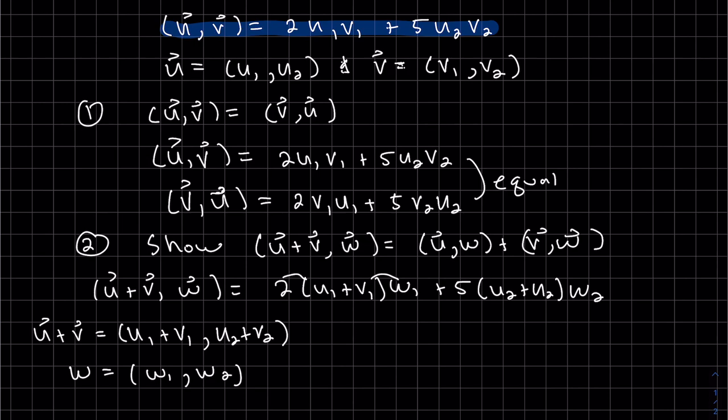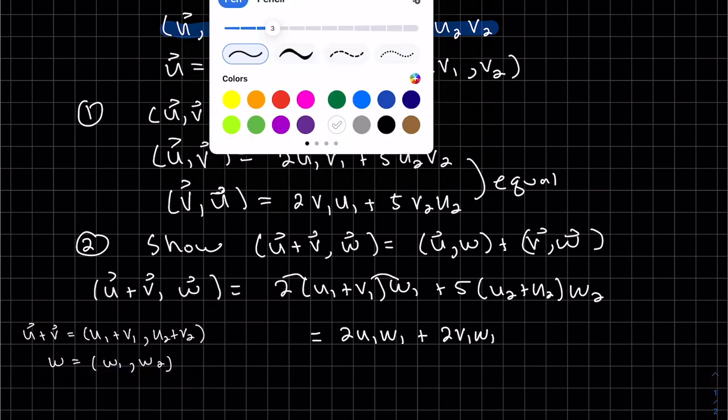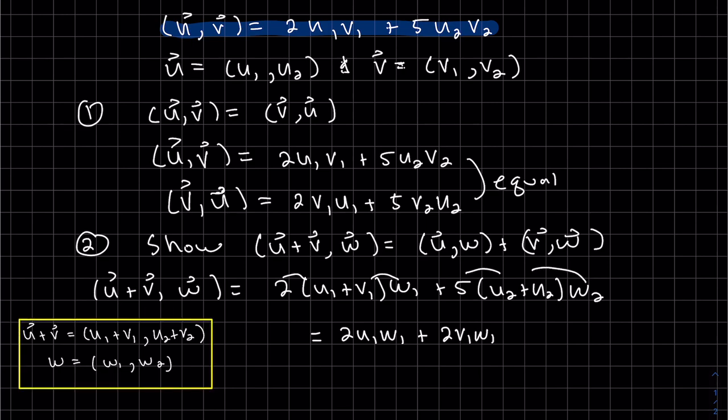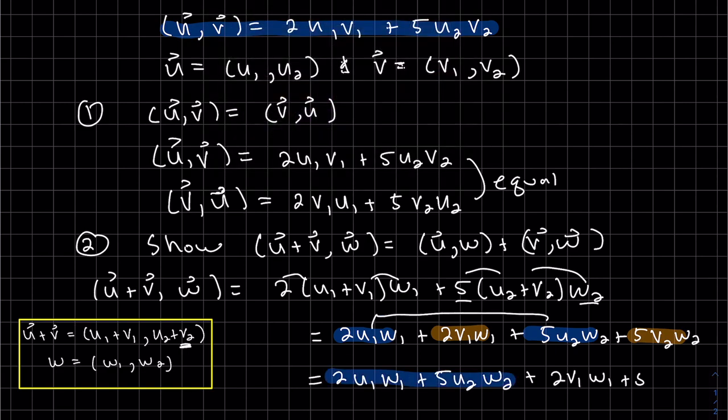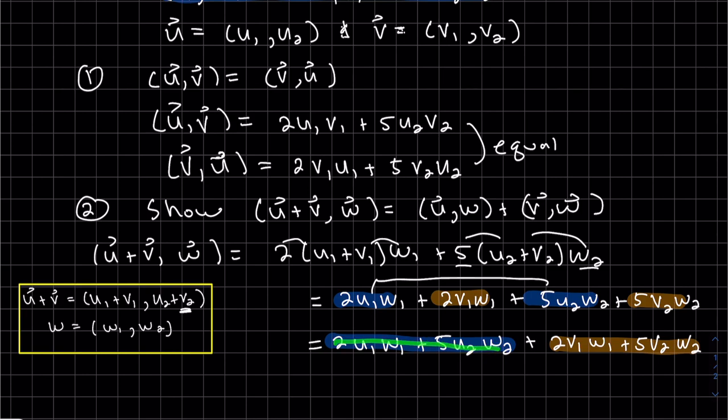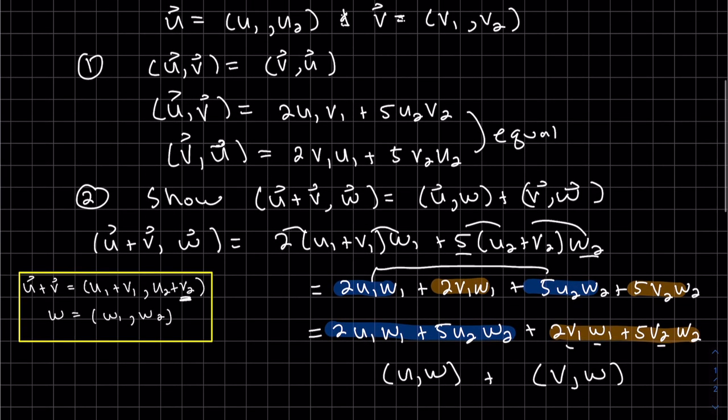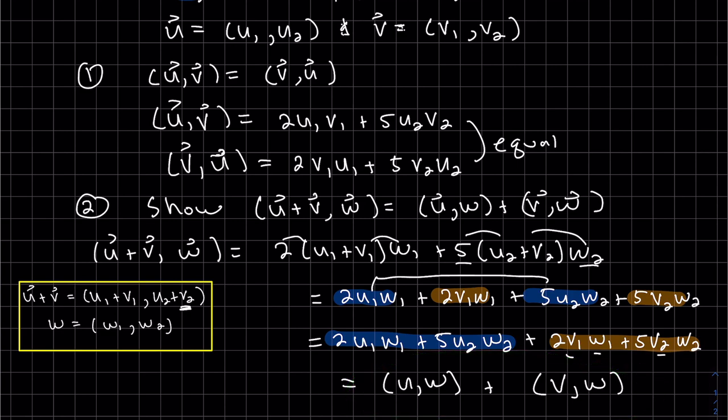And I add my second components and my w in line with all the others. So it's 2 times the first components, 5 times the second components. And then we can distribute. We can distribute the 2 and the w. And then we're going to distribute the 5 and the w. Let's rearrange. Let's put these together. And what we have here is our original definition. But it's not u v. It's u w for the first one. It's the inner product of u w. And this is the inner product of v w. And that looks like it is my right-hand side. That's what I wanted to show.